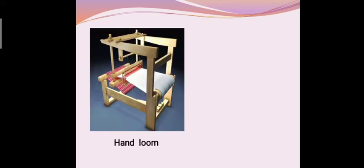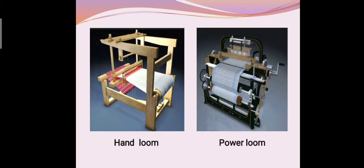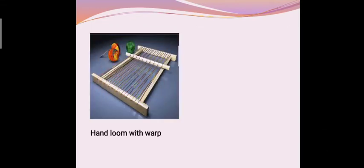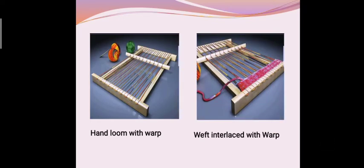Weaving is done on looms. Some looms are hand operated and are called hand looms. Whereas some are power operated and are called power looms. During weaving initially one set of yarn is fitted on a loom. The other set of yarn is then interlaced at right angles with the first set of yarn so as to get fabric.